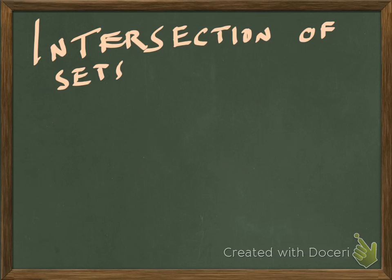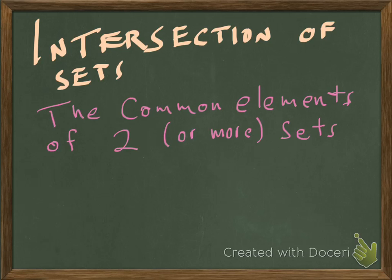The intersection of sets, on the other hand, is a little bit different, and it refers to the overlap or the common elements between two sets. Just the common or shared or overlapping elements of two sets. And it could be more than two sets.